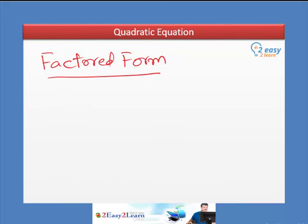Factor form or factorized form. In your previous chapter, you have learned how to factorize a quadratic equation. For example, y equals 3x plus 4 and x minus 7.